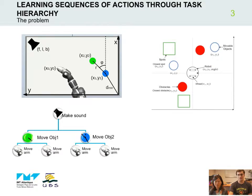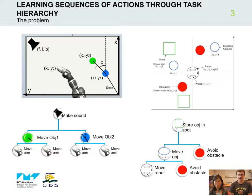In the mobile robot setup, the most complex task is storing an object on a specific spot. In order to do that, the robot first needs to be able to move the object around while avoiding obstacles. And to move the object, it needs to be able to first move itself while still avoiding obstacles.